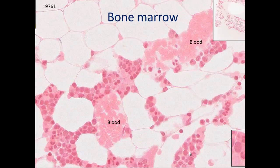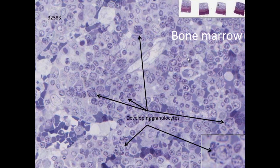Here we see bone marrow with fat cells and cells in development — these are the granulocyte precursors right in through here. We can see blood in blood vessels, and here are some mature neutrophils that have been released from the extravascular site to the blood vessels. With toluidine blue, we can see blood vessels running through the marrow and developing granulocytes throughout the bone marrow.